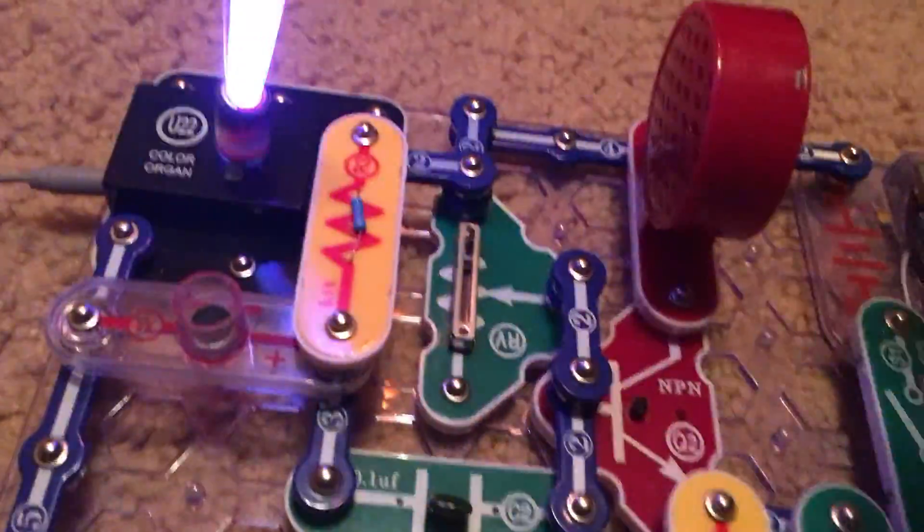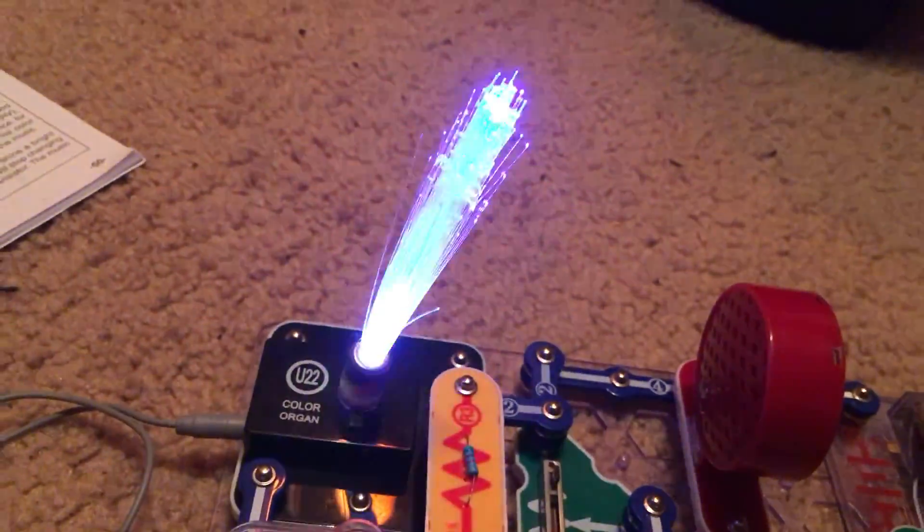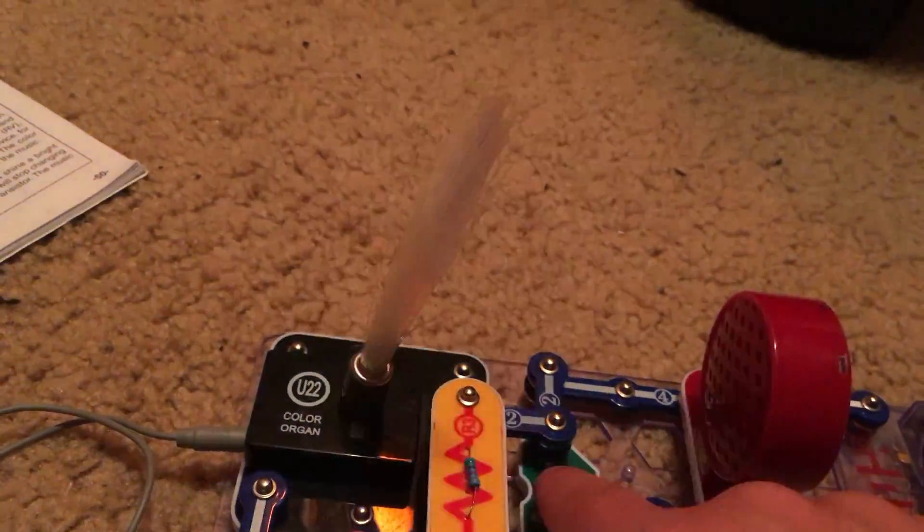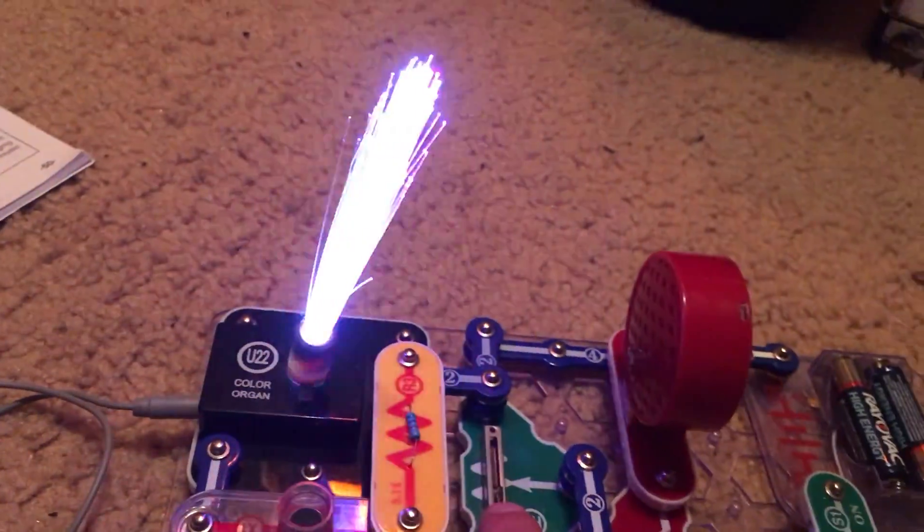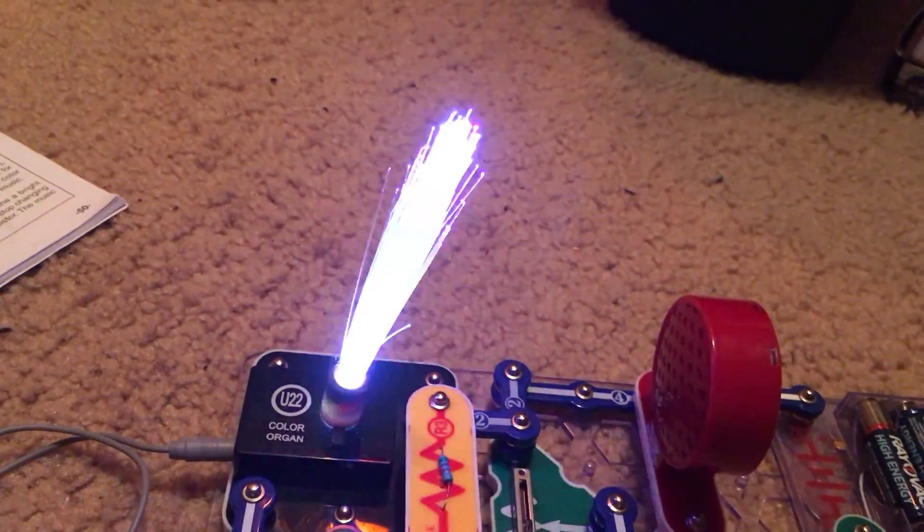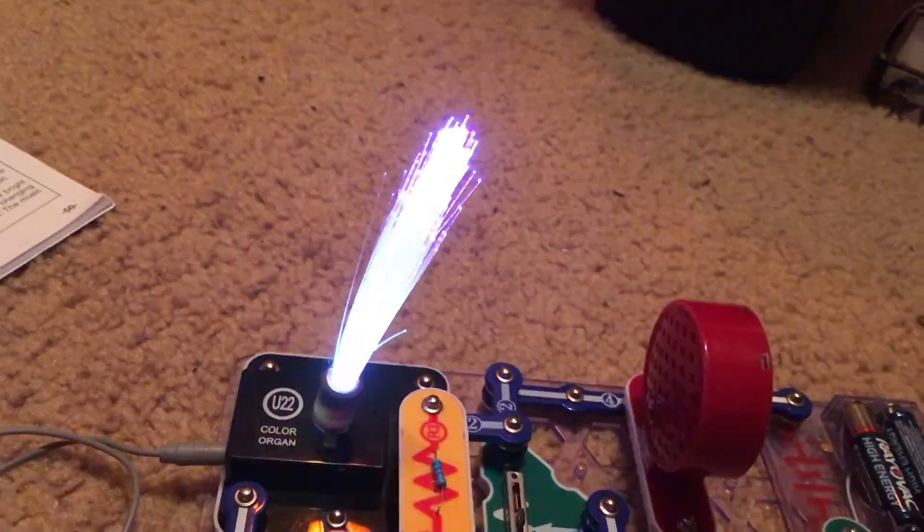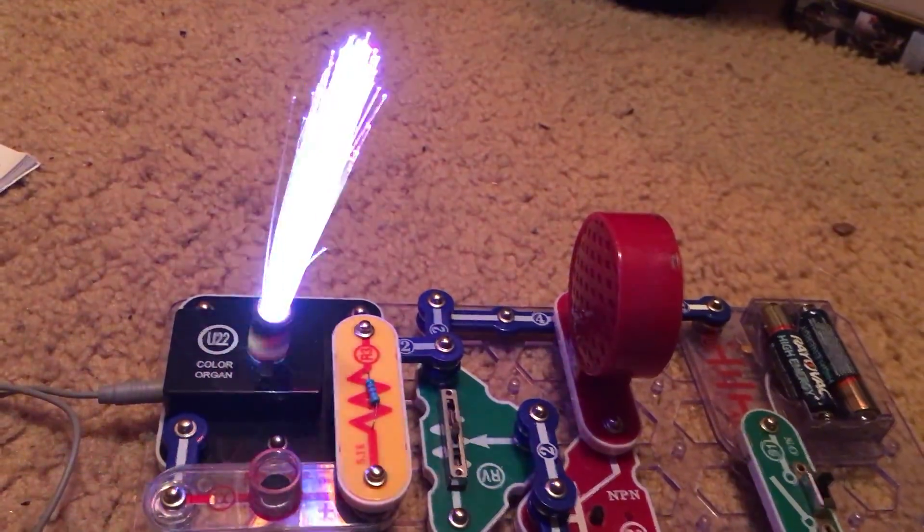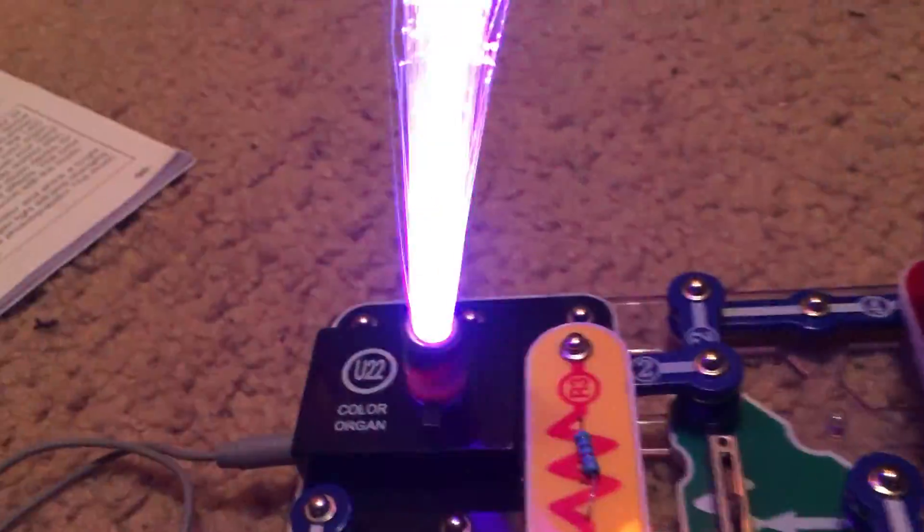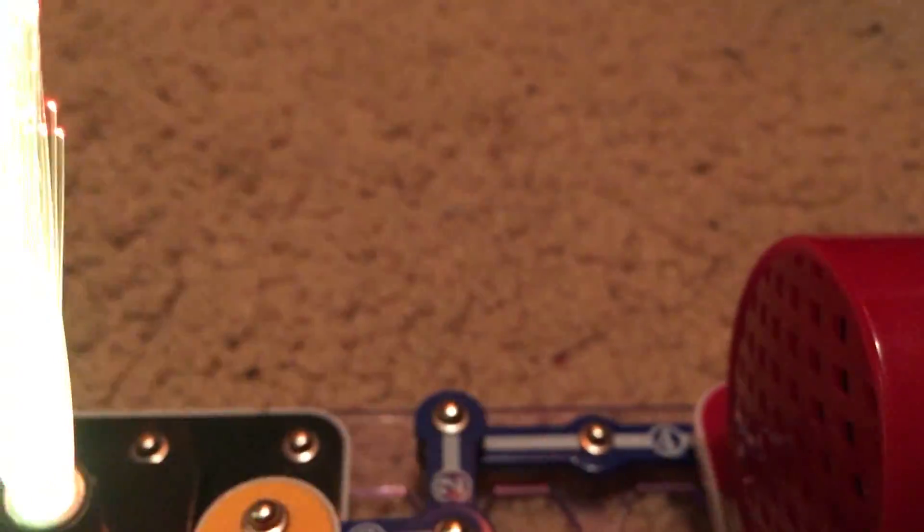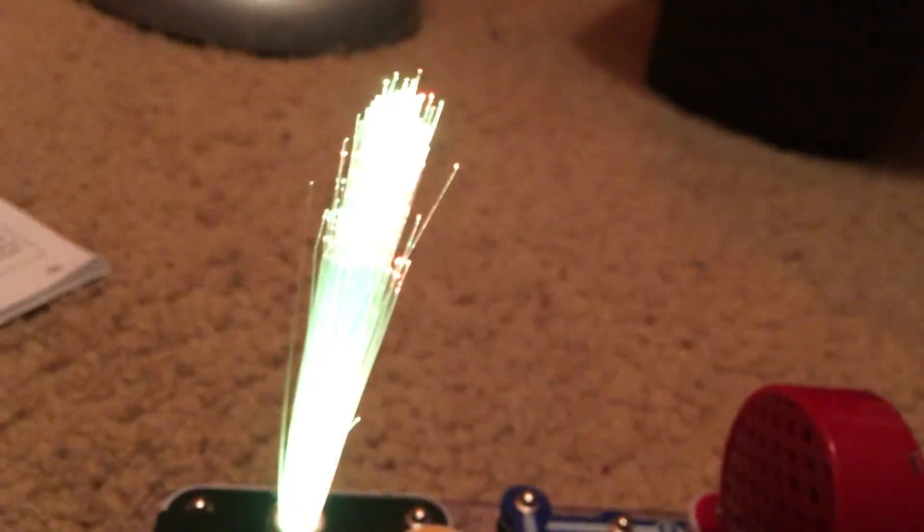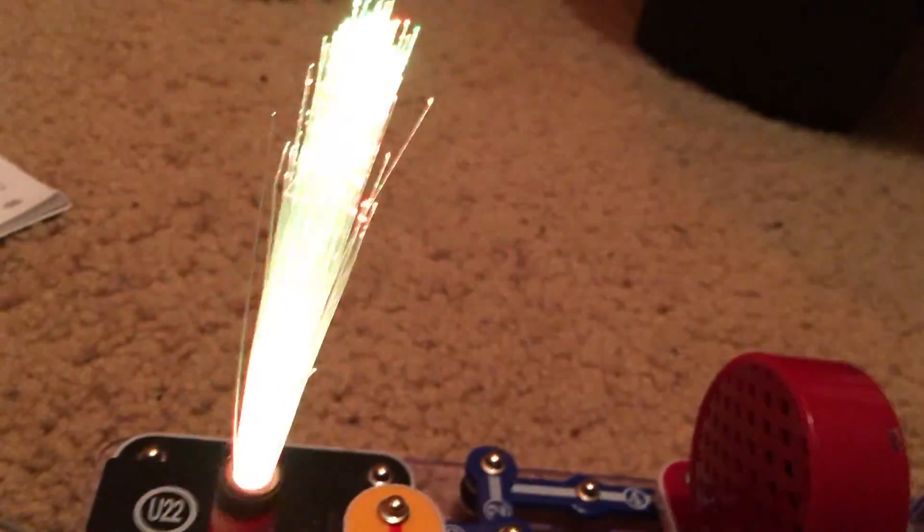Now we will adjust the volume for best effects. Now the music is very hard to hear, but the light on the color organ is changing colors according to the beat of the song. I had it on the lowest volume. But I'm going to lower the volume so that the circuit does not hear it as well. And we're going to blow into the microphone. I'm going to keep the camera focused on the light while I blow into it.